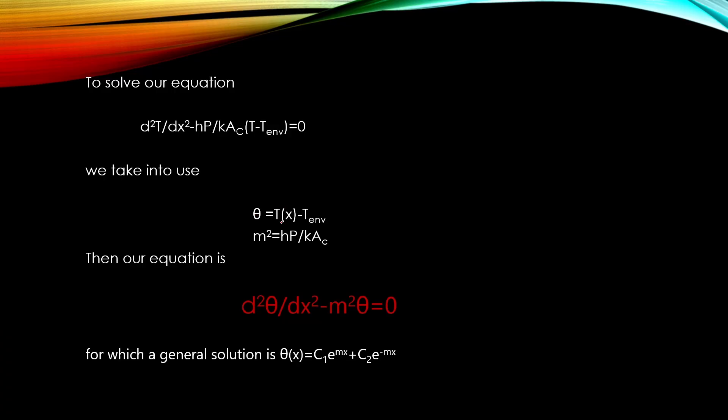If we take into use new variables theta, which is the temperature of the slot minus temperature of the environment, and the constant M squared, we can write this equation in this form. And in open literature this energy balance is typically shown in this form.